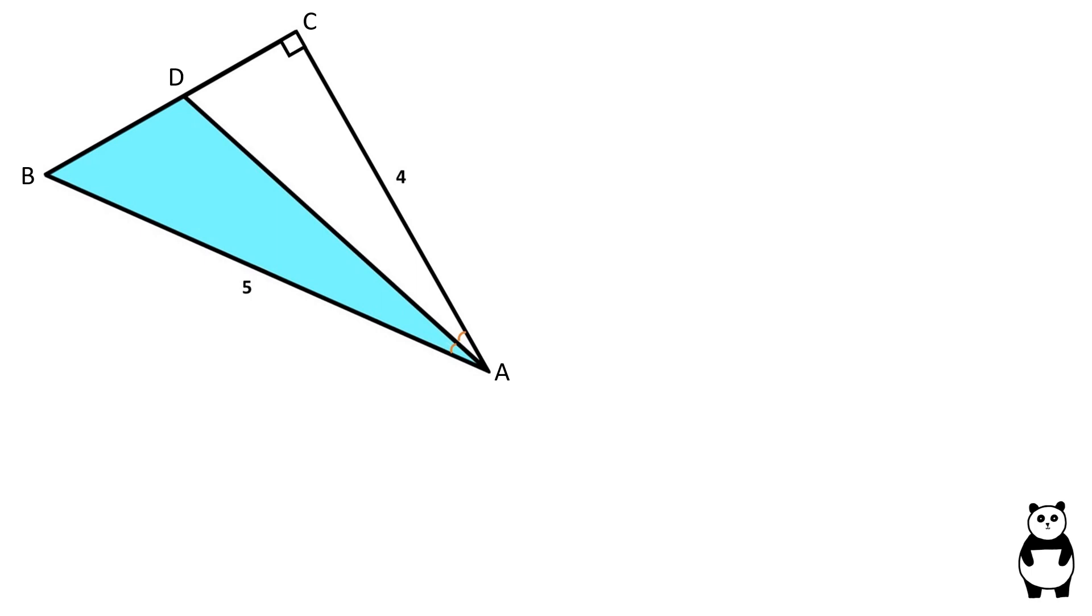Let's solve this problem. Triangle ABC is a right triangle. We can find BC using the Pythagorean theorem. BC is equal to 3.